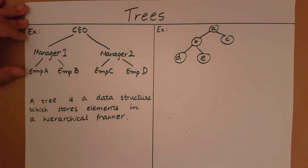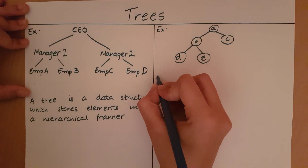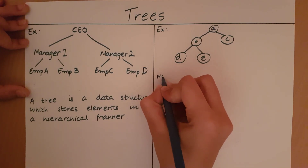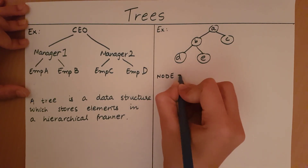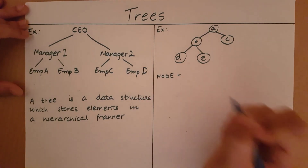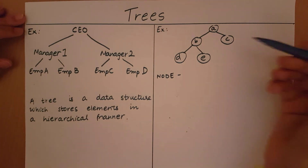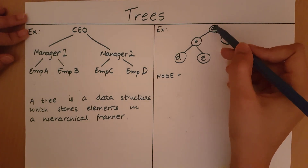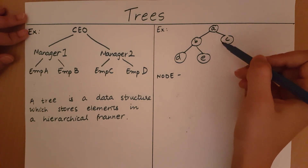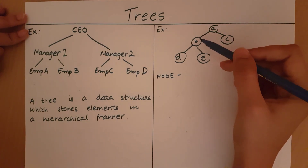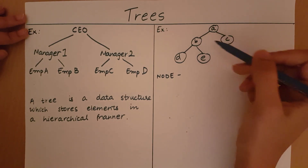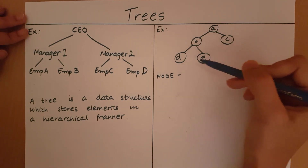First, let's look at what a node is. Nodes of a tree are going to be the data elements of a tree. So in this example, the nodes are represented by circles which are storing the data elements. So the nodes are going to be A, B, C, D and E.